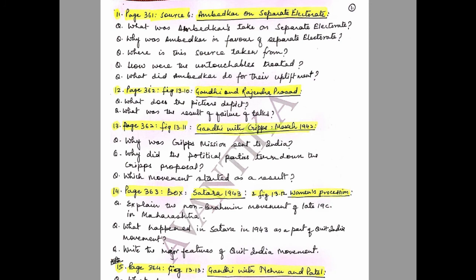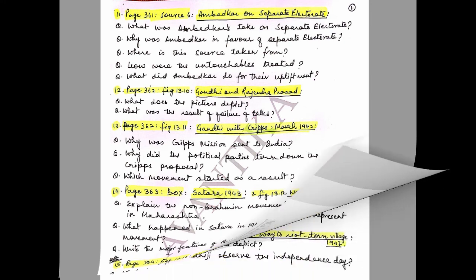Question 12: Page 362, Figure 13.10 — Gandhi and Rajendra Prasad. Questions: What does the picture depict? What was the result of the failure of talks? Question 13: Page 362, Figure 13.11 — Gandhi with Cripps, March 1942. Questions: Why was the Cripps Mission sent to India? Why did political parties turn down the Cripps proposal? Which movement started as a result?